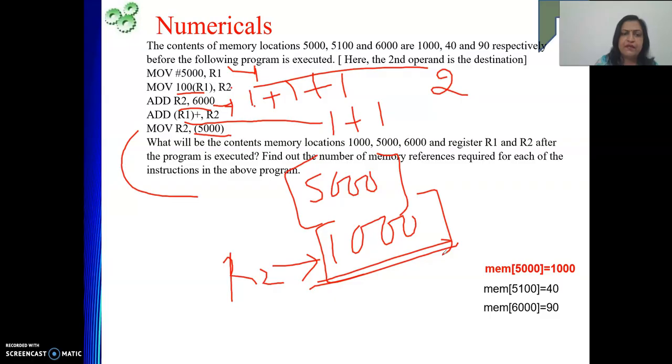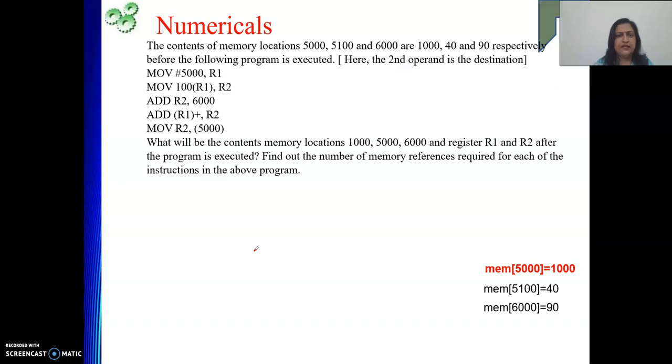Content of R2 will be written into this location. This has been done by this instruction. So how many times we have referred memory? This is once. This is once. So total for this part 2 or instruction fetch 1. So 1 plus 1 plus 1 is 3 times we have referred to the memory. So memory references are quite easy. And we have done so many problems of this type. So we can do it quickly.